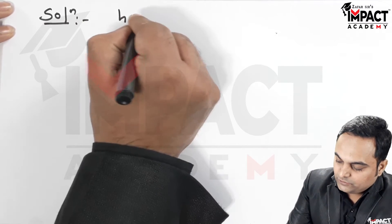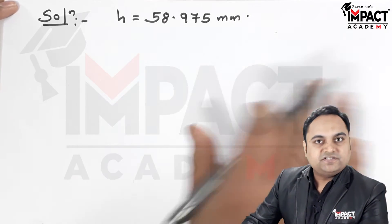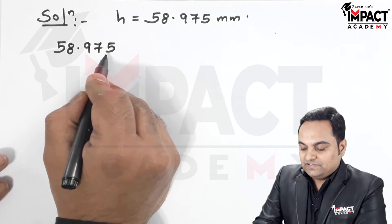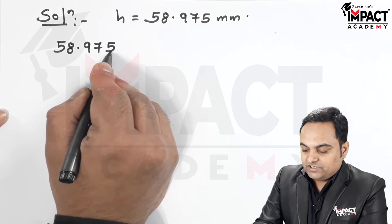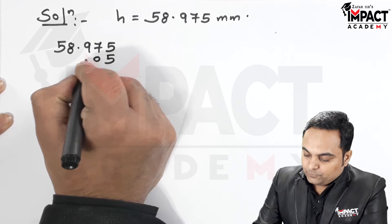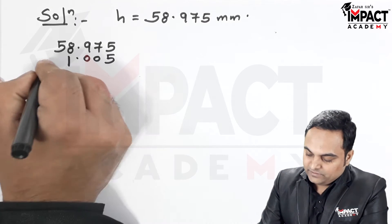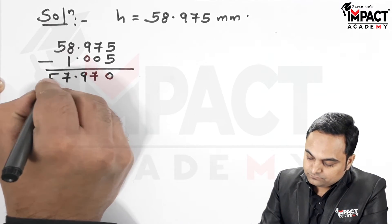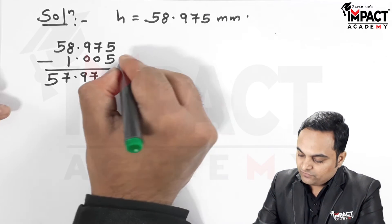To build 58.975 mm, I'll use a simple method: make the last digit after the decimal zero by subtracting a suitable gauge. To eliminate the last digit 5, we subtract 1.005. Doing the subtraction gives 57.97. So 1.005 mm is the first slip gauge selected.